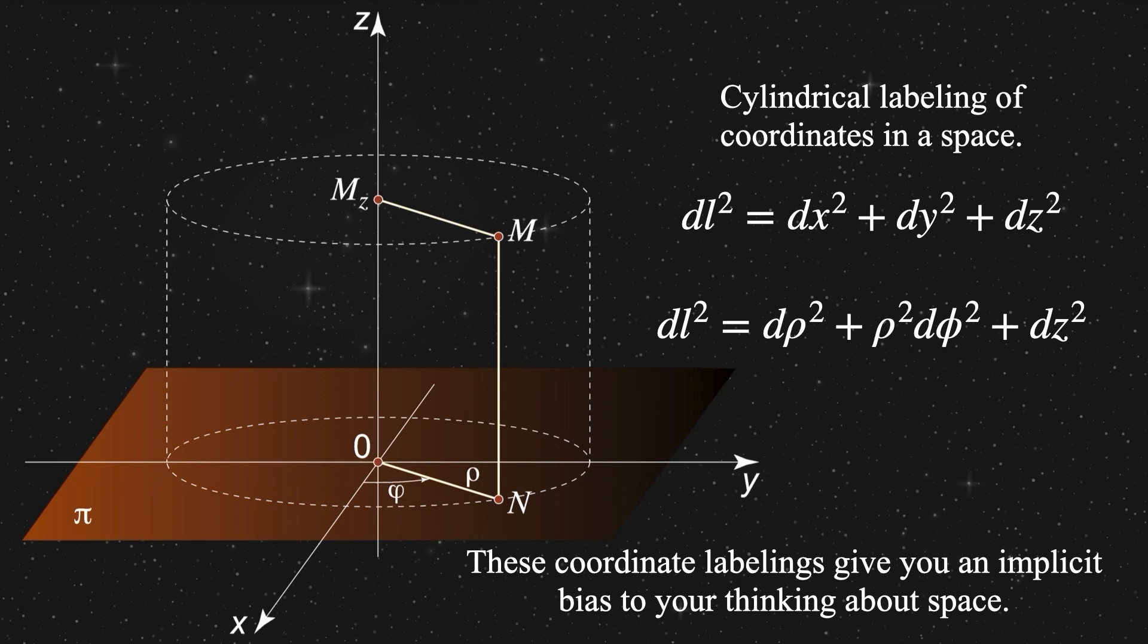Unfortunately for our common sense, there are an infinite number of spaces that are homogeneous and isotropic, and only exactly one of them abides by Euclid's axioms. To show what I mean, let's take this concept of a cylindrical coordinate system and play with it for a little bit.